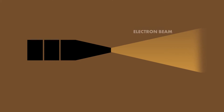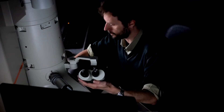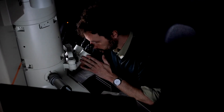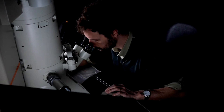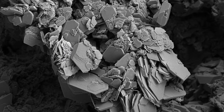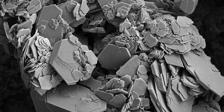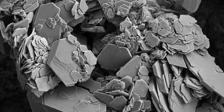An electron beam is a stream of electrons manipulated by electromagnetic fields to move in the same direction and at the same speed. For over a century, electron beams have played a prominent role in the discovery of microstructures, unlocking the secrets of the natural world. However, these traditional microscopes can only enable structural observation. In order to study atomic movement in these microstructures, it has been necessary to develop ultra-short pulsed electron beams.